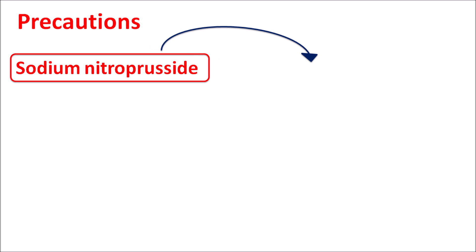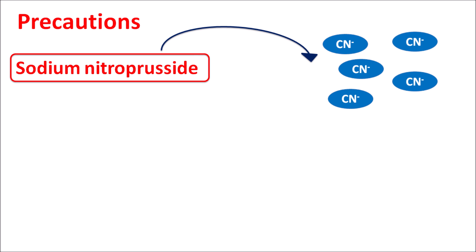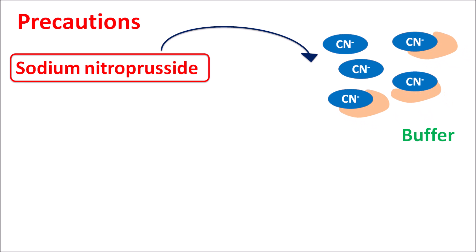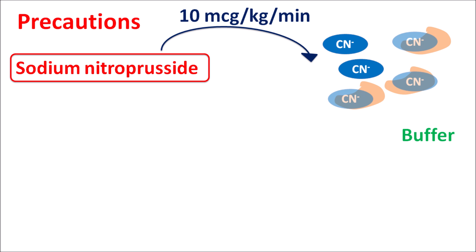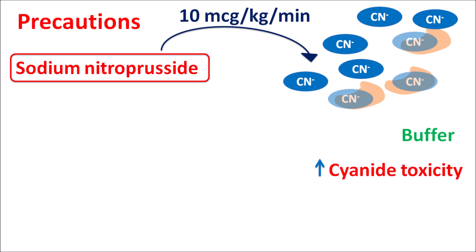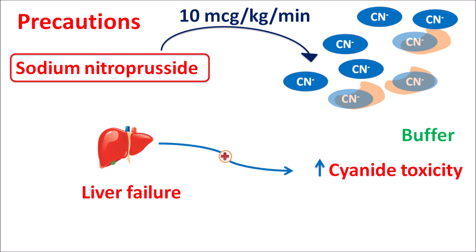As seen in the chemical structure, sodium nitroprusside contains cyanide groups, so it can release cyanide anions that are complexed by systemic buffers. At low doses, the small amount of cyanide ions released is captured by these buffers. However, at high infusion rates, more cyanide ions are released than can be buffered, resulting in increased cyanide toxicity. This is especially important in patients with liver failure, where cyanide toxicity is more pronounced, resulting in hypovolemia and anemia.